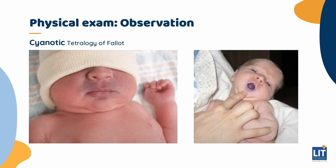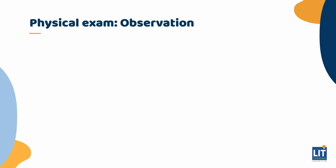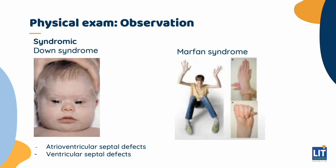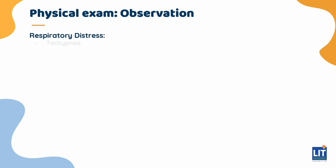On examination, observe the child for cyanosis and respiratory distress at rest and when crying or feeding. Look for characteristic features of syndromes associated with cardiac disease, such as Down syndrome and Marfan syndrome. About 50% of patients with Down syndrome have congenital heart defects, the most common of which are atrioventricular septal defects, also known as endocardial cushion defects, and ventricular septal defects — 69% of all patients with atrioventricular septal defects have Down syndrome. This is heard as a holosystolic murmur at the left lower sternal border and apex with an accentuated S2 and S3. Also observe for respiratory distress and wheezing, which may be a manifestation of cardiac failure, and assess for the presence of clubbing and decreased peripheral perfusion.